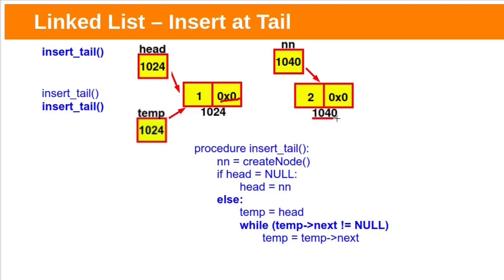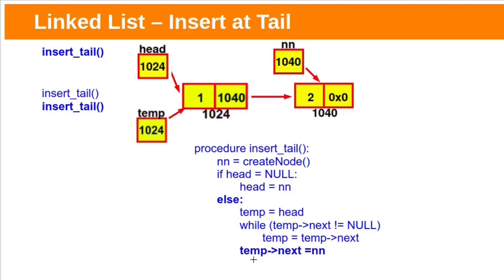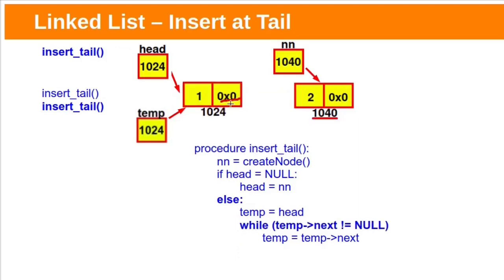Add this new node to the list at the tail. That can be done by storing the new node address in the temp next field. Now see here temp next field has 1040; previously it was 0. Now we have two nodes within our linked list.